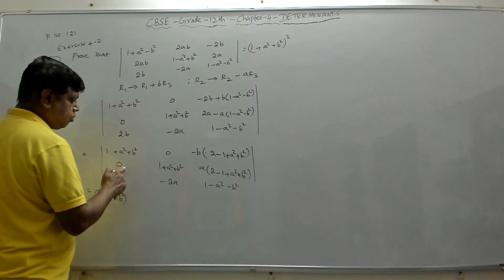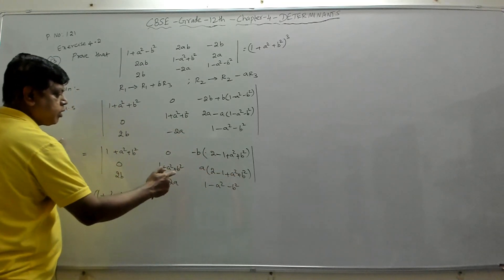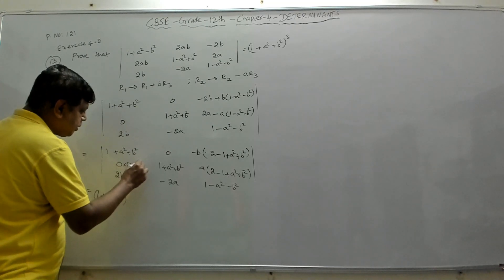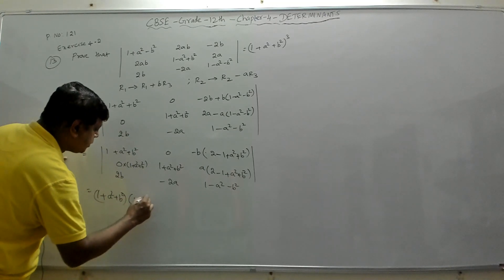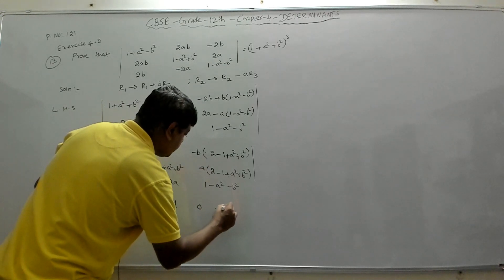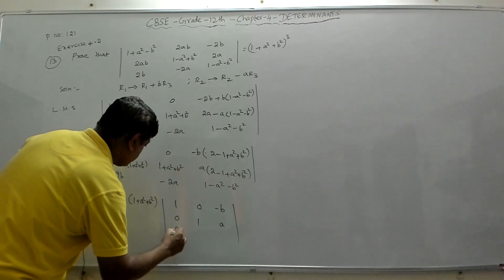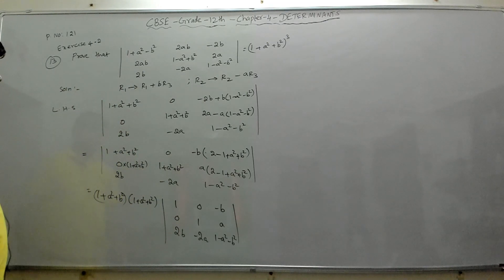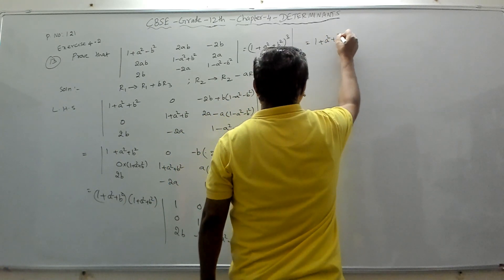Taking (1 + a² + b²) out from row 1 and again from row 2 gives (1 + a² + b²)². After factoring out, row 1 becomes 1, 0, -b; row 2 becomes 0, 1, a; row 3 remains 2b, -2a, 1 - a² - b². So the determinant equals (1 + a² + b²)² times this 3×3 determinant.